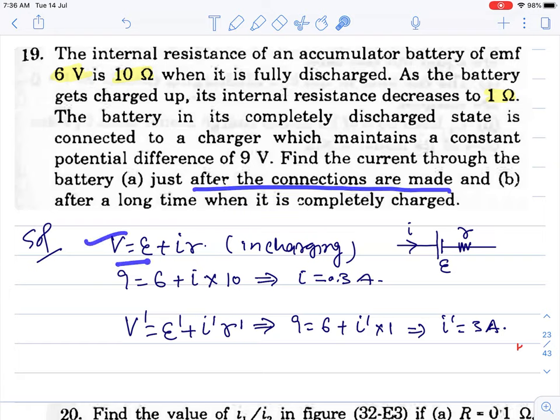Find the current just after the connections are made. During charging, terminal potential equals EMF plus IR. Here, putting values: 9 is given, EMF is 6, we need to find current. Internal resistance is very high initially at 10 ohm. So current initially, when internal resistance is high, current will be less.